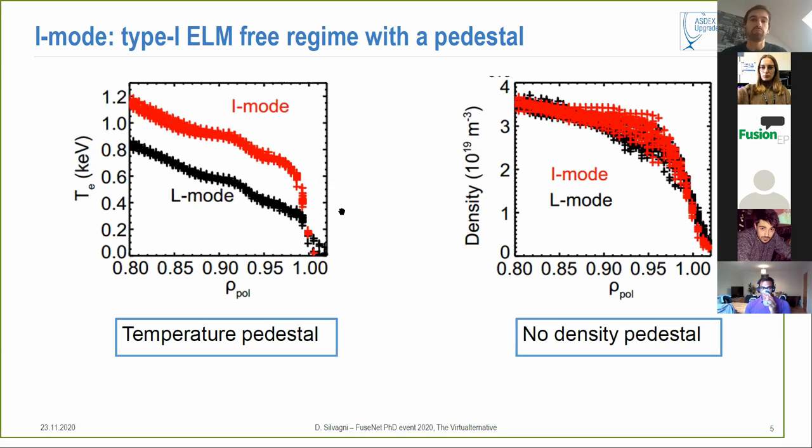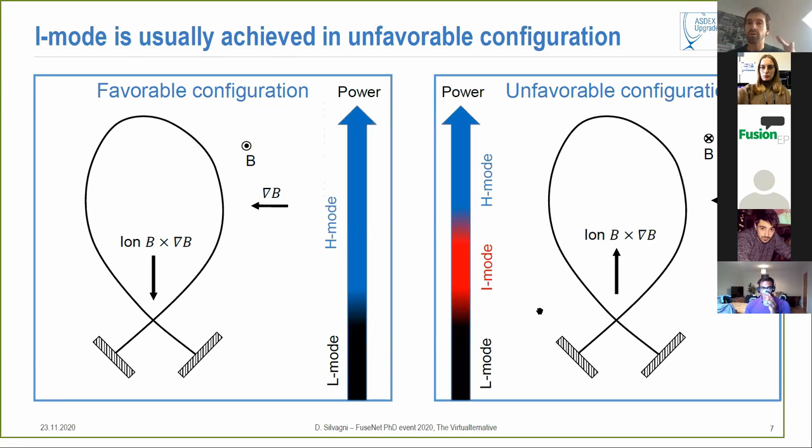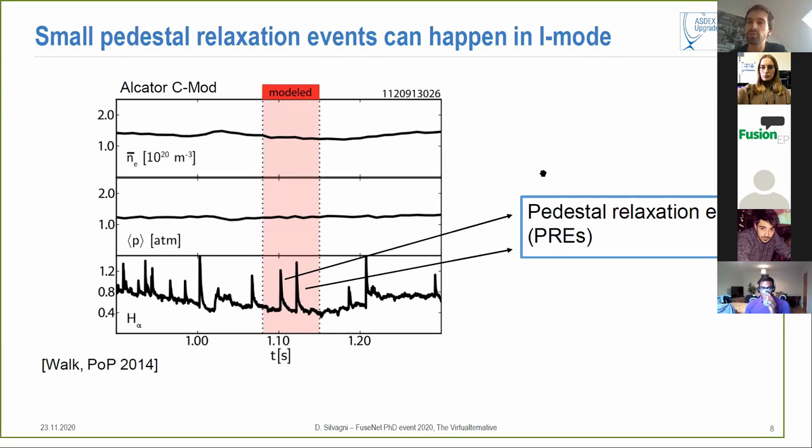But how to achieve I-mode? We can have two different configurations of our plasma, one called favorable where the ion B-grad-B drift is pointing towards the X-point, and another called unfavorable when this ion B-grad-B drift is pointing away from the X-point. If we put power into our configuration you can see that in the favorable configuration at some point you will have a transition into H-mode. However in the unfavorable configuration you will at some point have a transition into the I-mode and then later at higher power you will enter H-mode. So in this way we can achieve our I-mode.